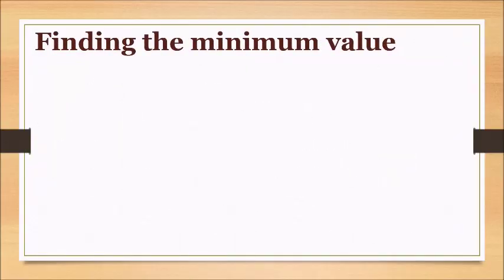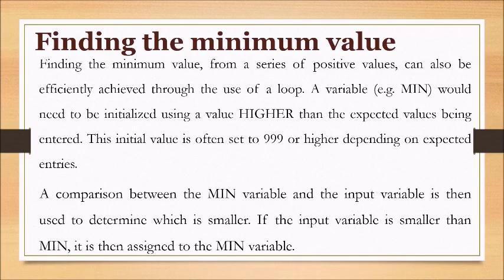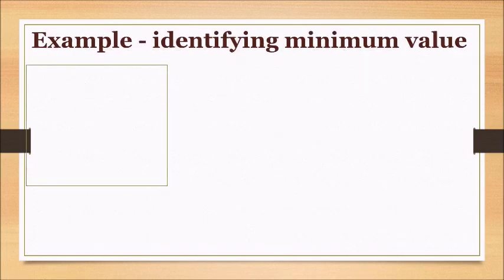Finding the minimum value: finding the minimum value from a series of positive values can also be efficiently achieved through the use of a loop. A variable — for example, 'min' — would need to be initialized using a value higher than the expected values being entered; this initial value is often set to 9999 or any higher value depending on expected entries. A comparison between the min variable and the input variable is then used to determine which is smaller. If the input variable is smaller than min, it is then assigned to the min variable.